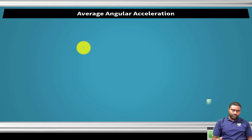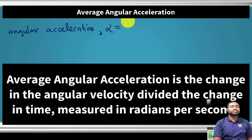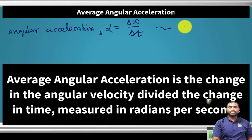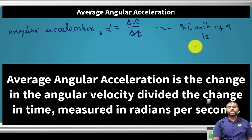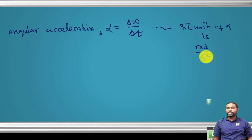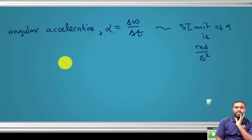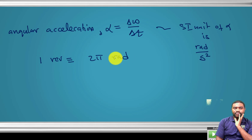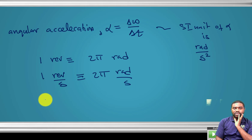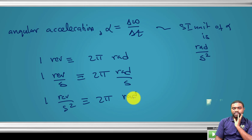Next, angular acceleration alpha (α) is equal to delta omega divided by delta t. The SI unit of alpha is radians per second squared. One revolution per second squared is equivalent to 2π radians per second squared.